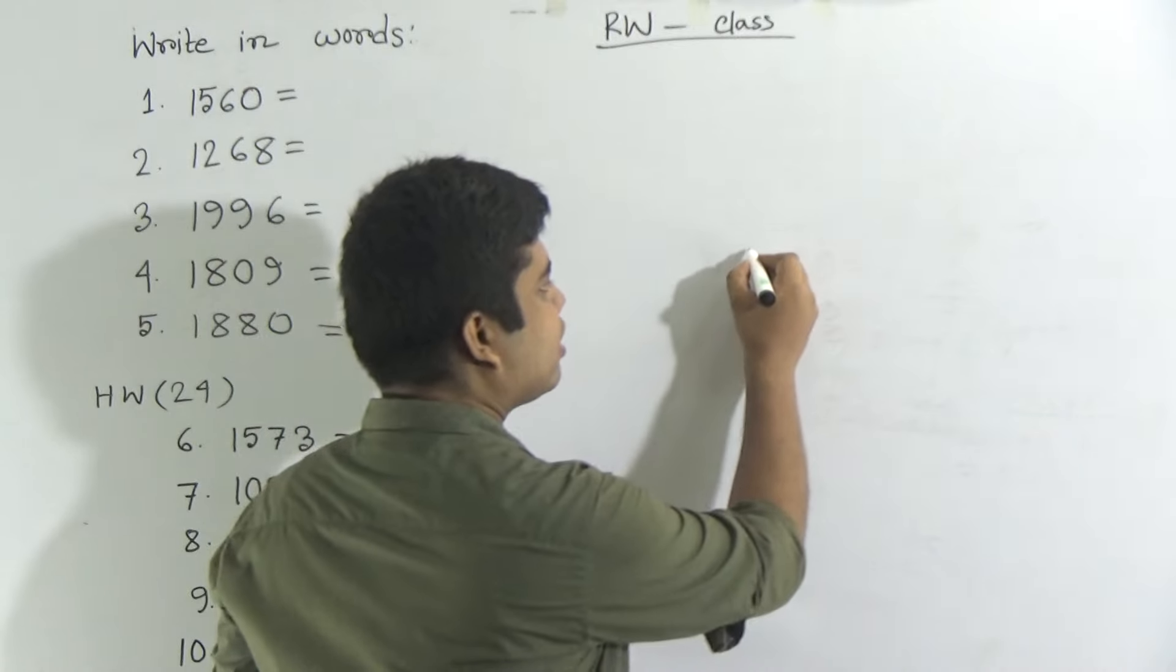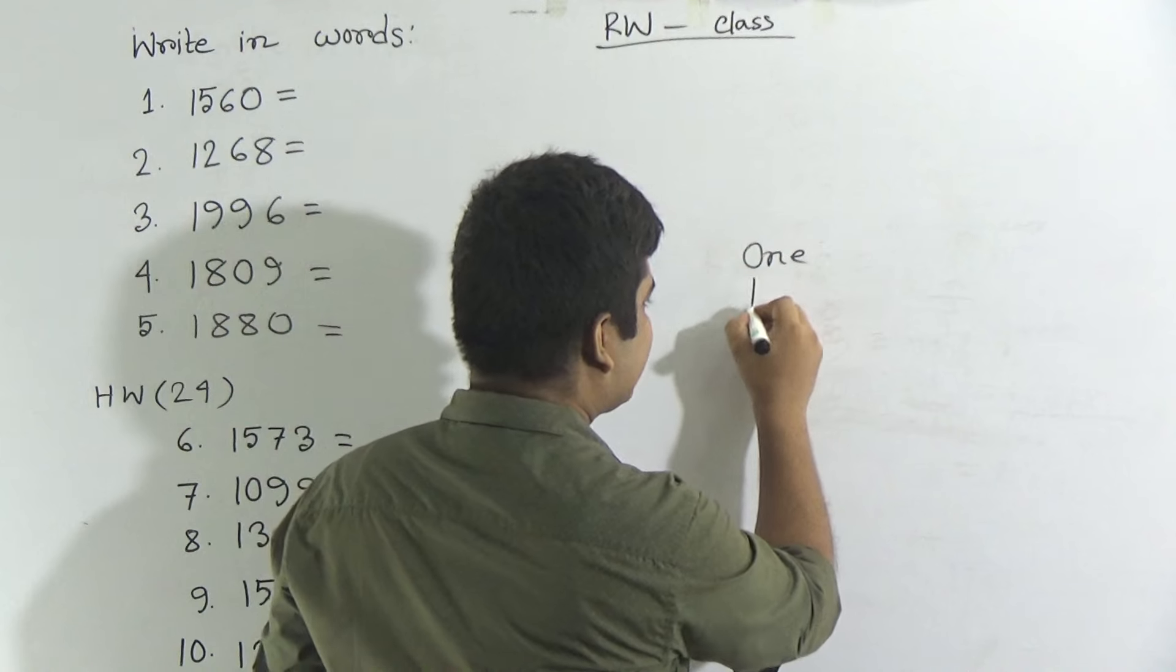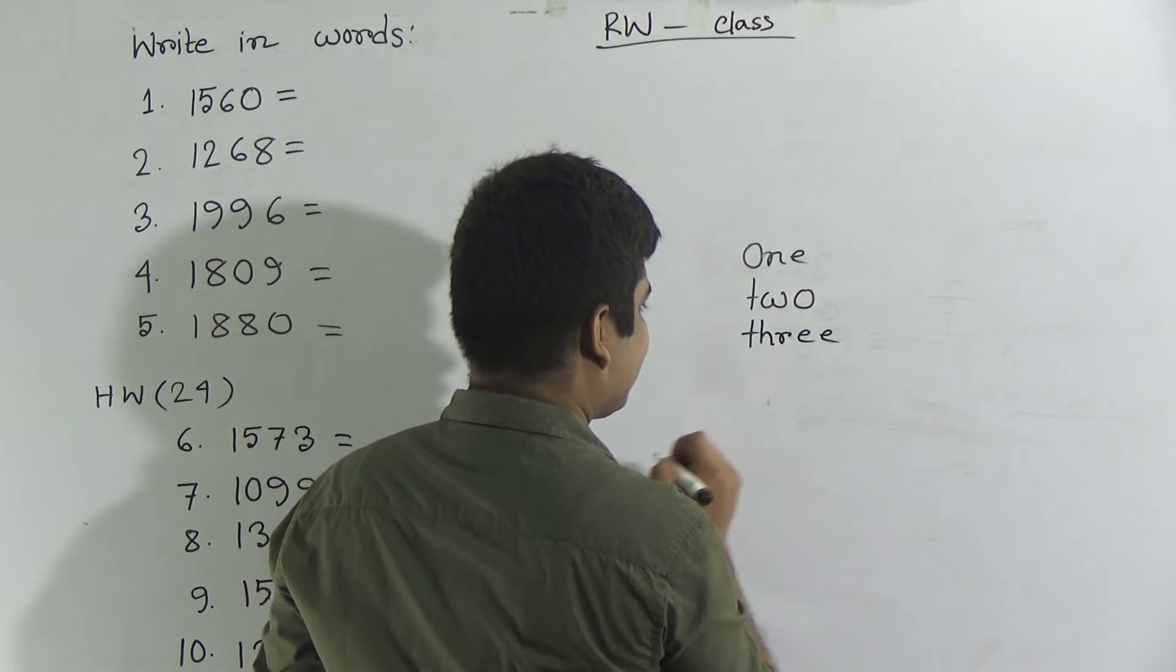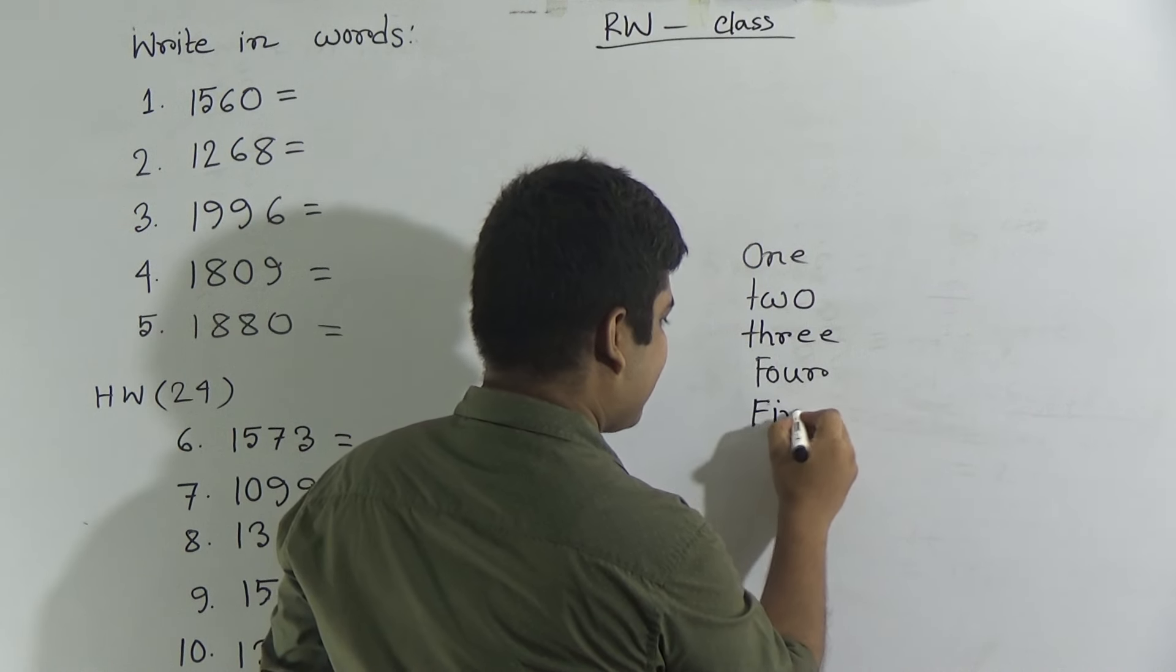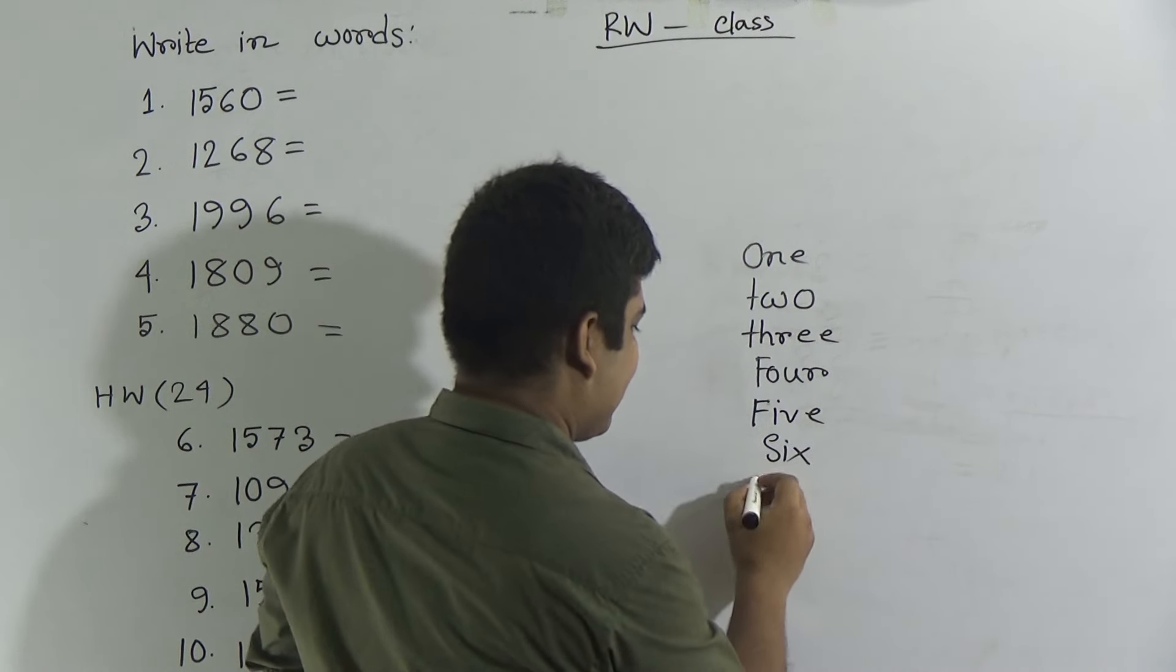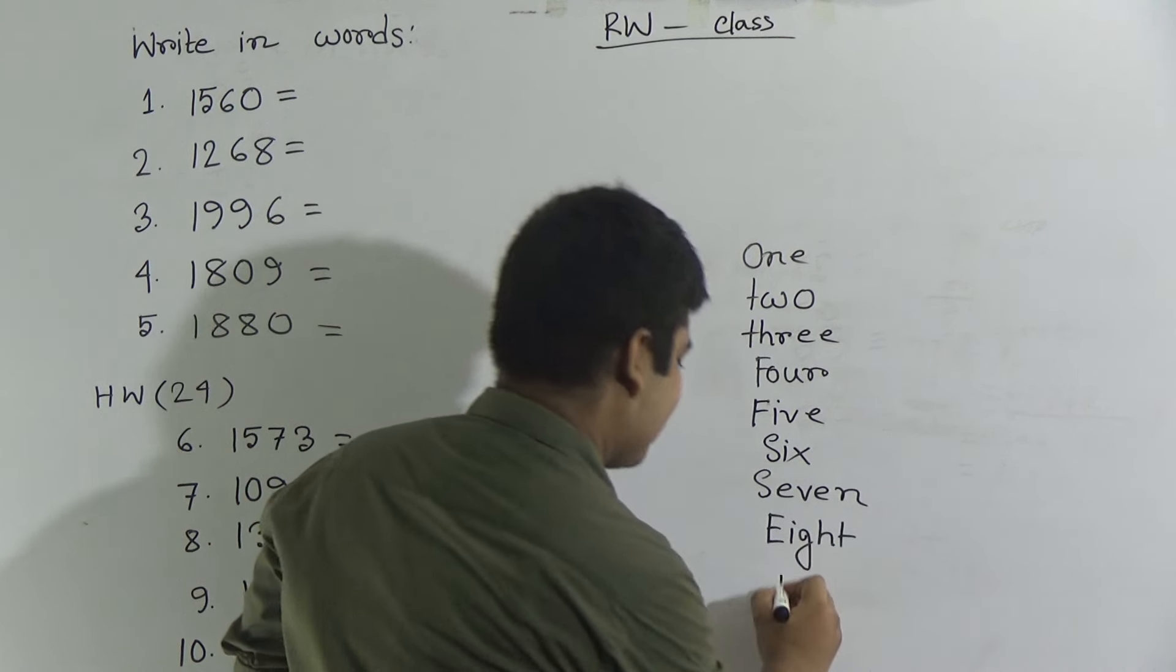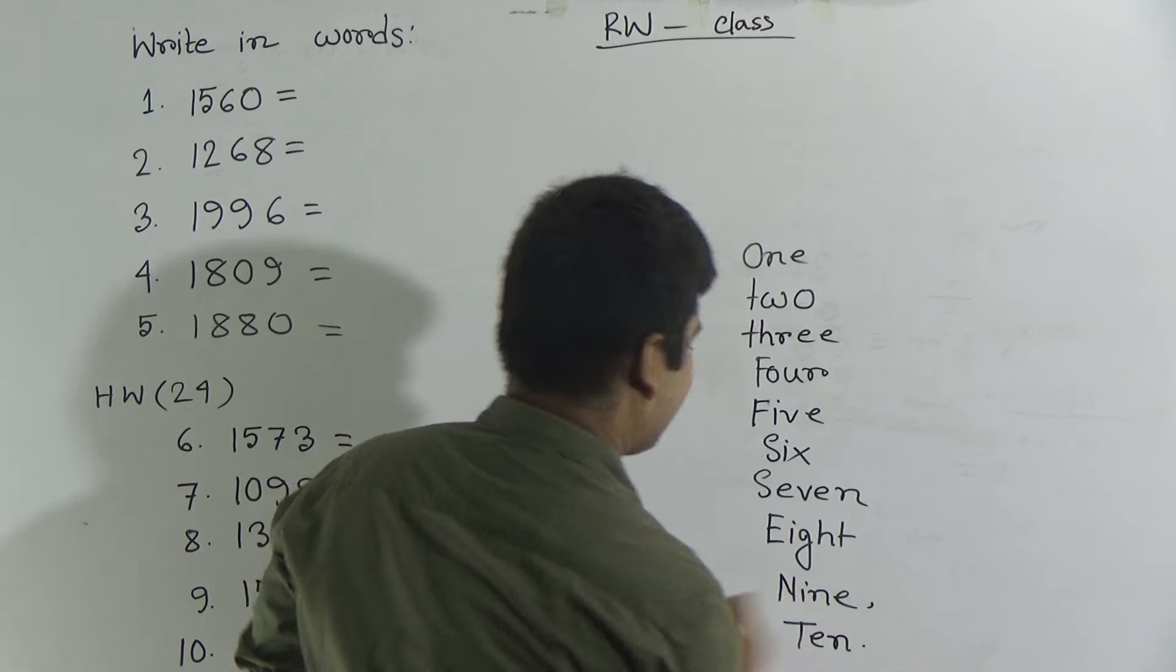What is the spelling of ONE? The spelling ONE is O-N-E. The spelling of 2 is T-W-O. The spelling of 3 is T-H-R-E-E. Spelling of 4 is F-O-U-R. Spelling of 5 is F-I-V-E. Spelling of 6 is S-I-X. Spelling of 7 is S-E-V-E-N. And 8 E-I-G-H-T. 9 N-I-N-E. 10 T-E-N.